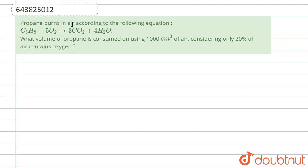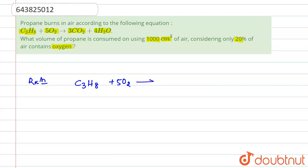Propane burns in air according to the following equation: C3H8 plus 5 O2 gives 3 CO2 plus 4 H2O. What volume of propane is consumed using 1000 centimeter cube of air, considering only 20 percent of air contains oxygen? So the reaction we have is C3H8 plus 5 O2, which gives 3 CO2 plus 4 H2O.